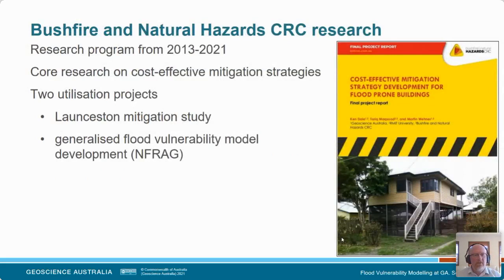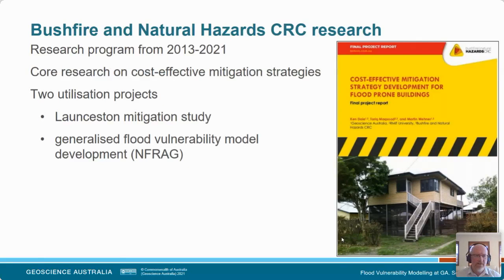Moving now onto the Bushfire and Natural Hazards CRC research. This was an eight-year program that completed earlier this year. Our core research was on cost-effective mitigation strategy — we were trying to develop an evidence base that could be used by decision makers to make cost-effective decisions on mitigation for flood-prone buildings. In addition to the core research program, we had two utilisation projects: one looking at mitigation in Launceston where the levy system was upgraded, and we worked with the National Flood Risk Advisory Group to develop some generalised flood vulnerability models.